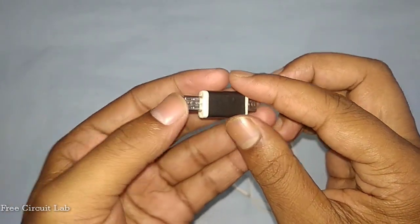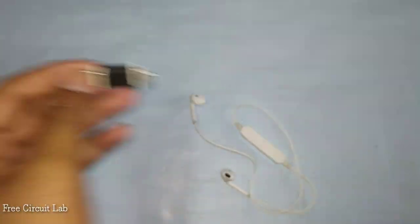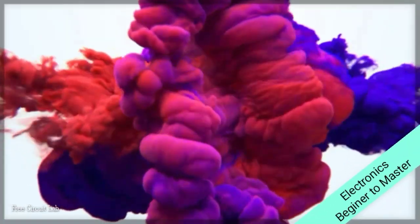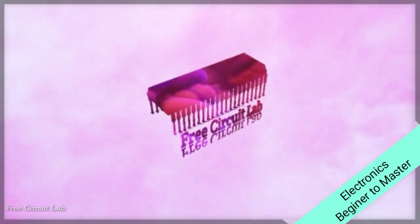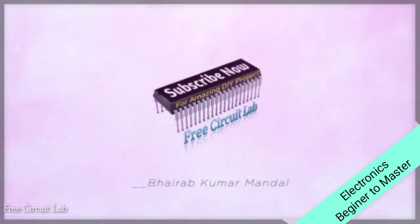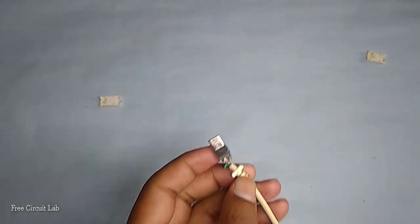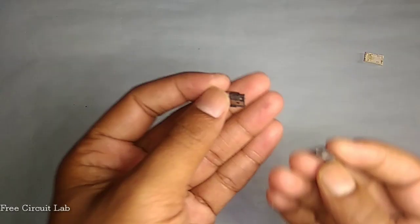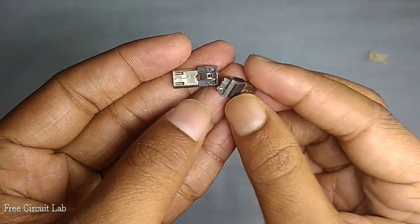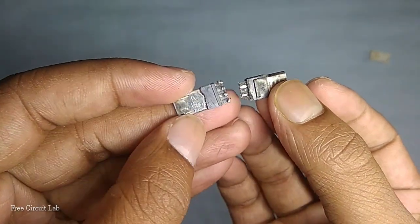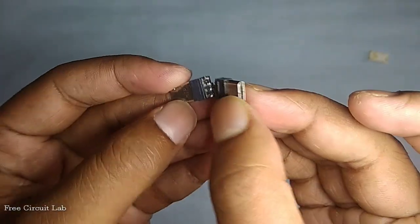Now without wasting any more time, let's get into the video. So guys, first we need to take our micro USB connectors from our old cable. We need two such connectors to connect them plus to plus, minus to minus. We need to flip one connector, then it will be connected straight.